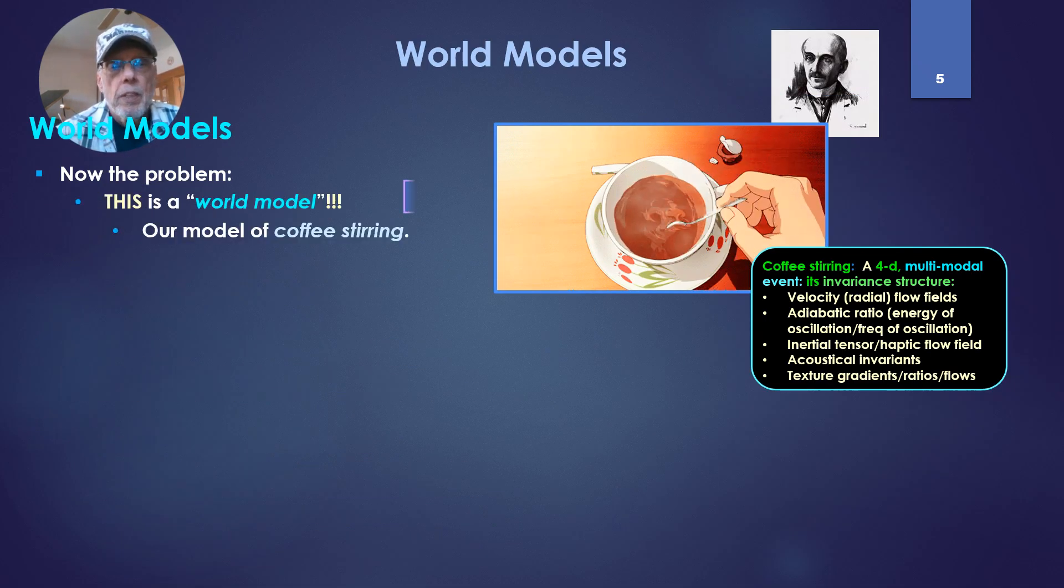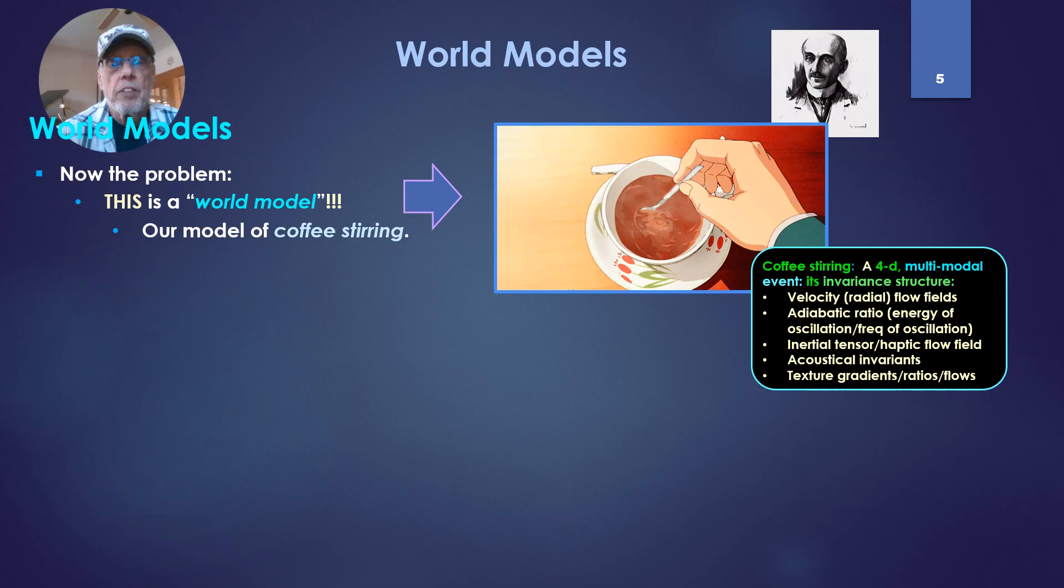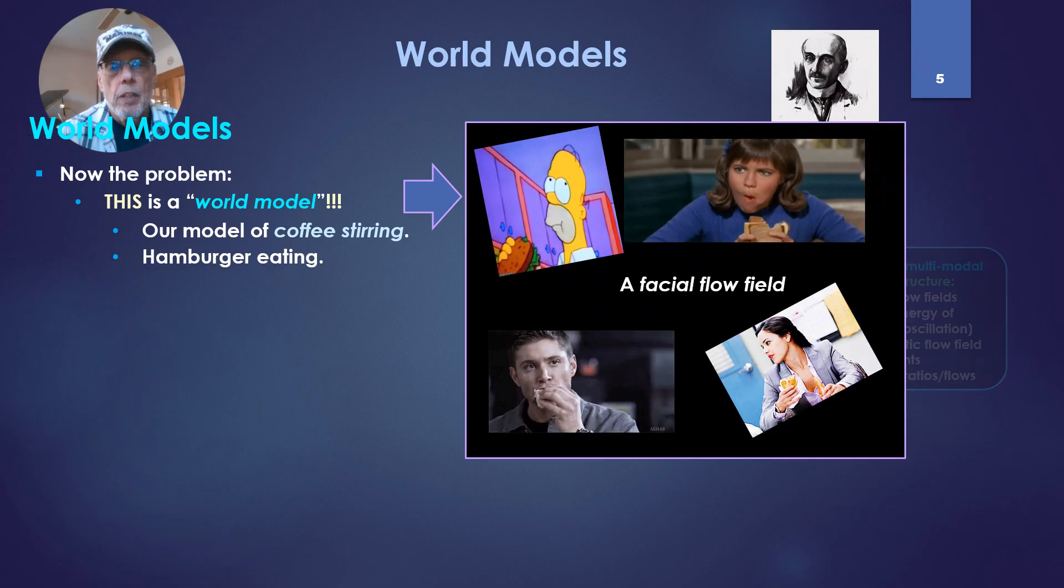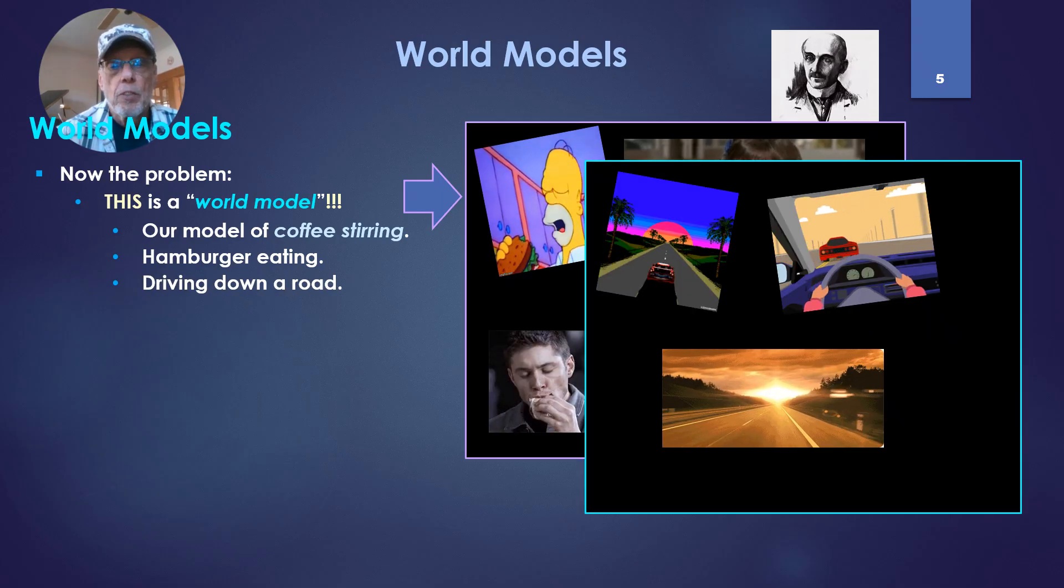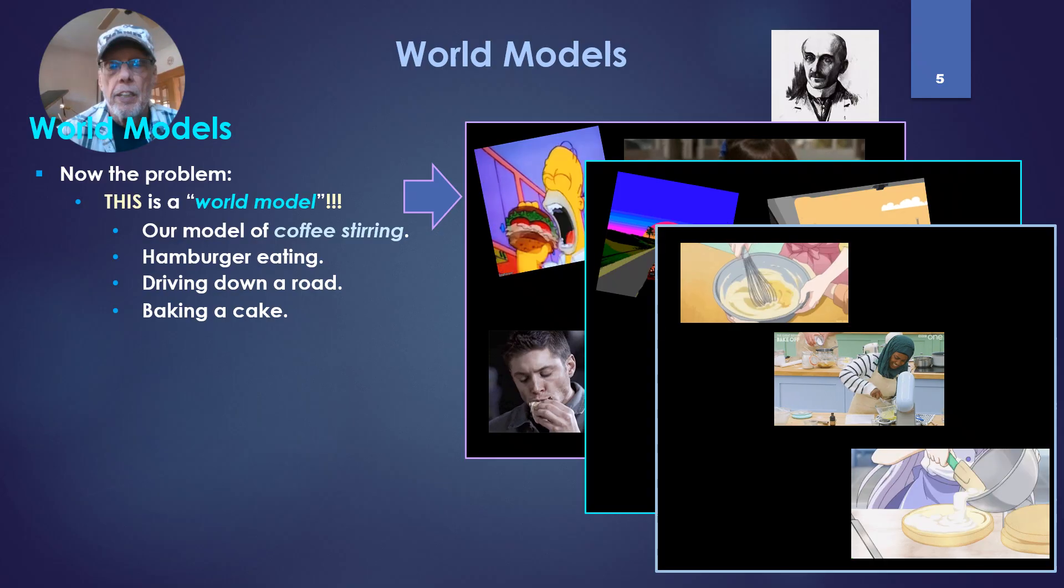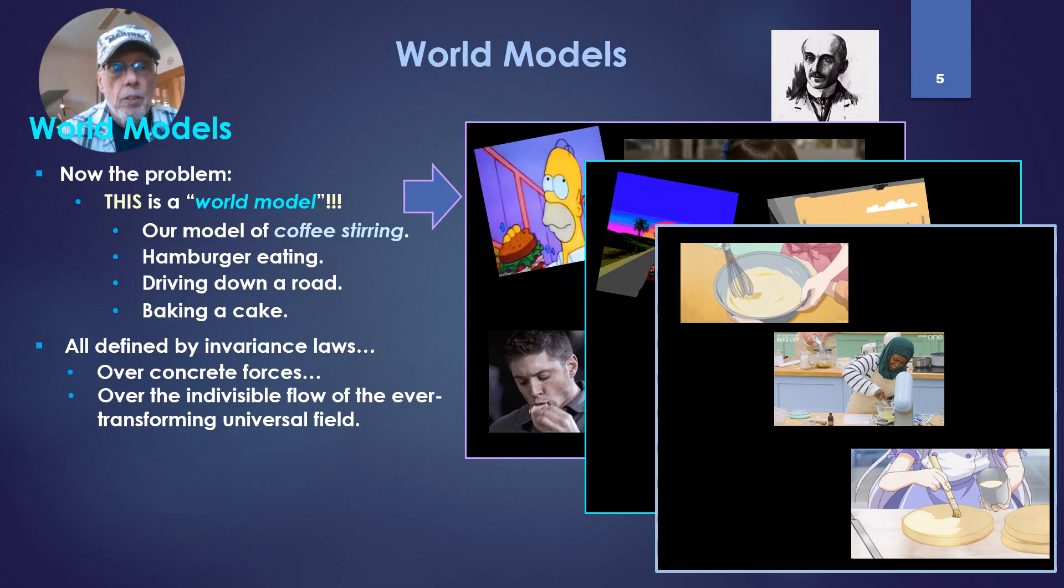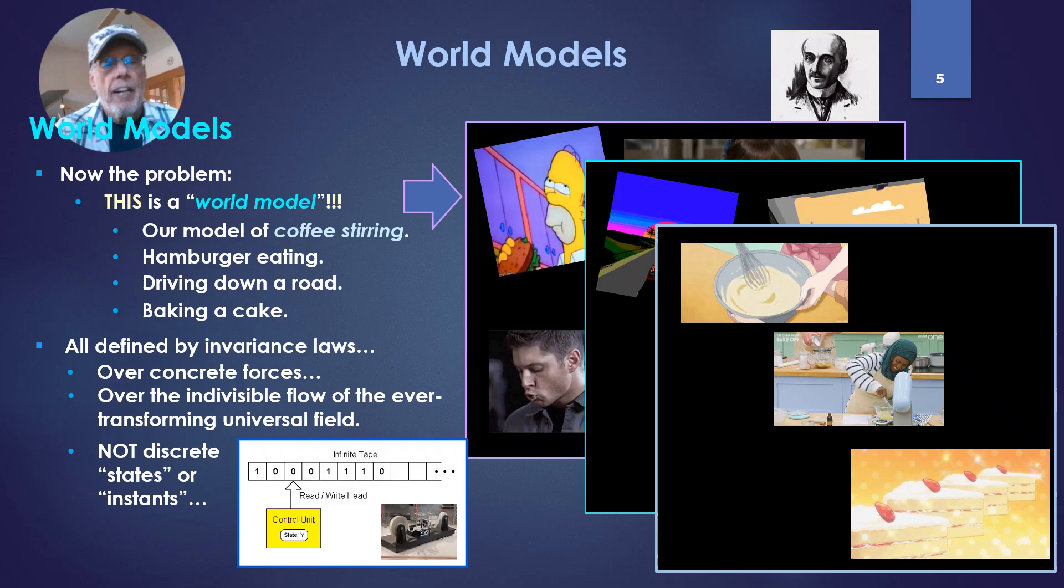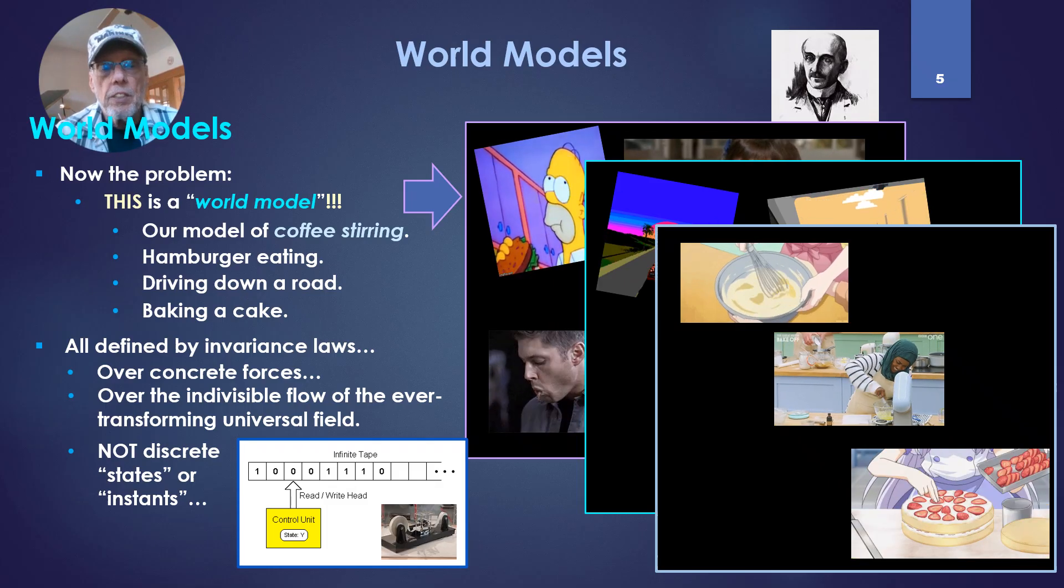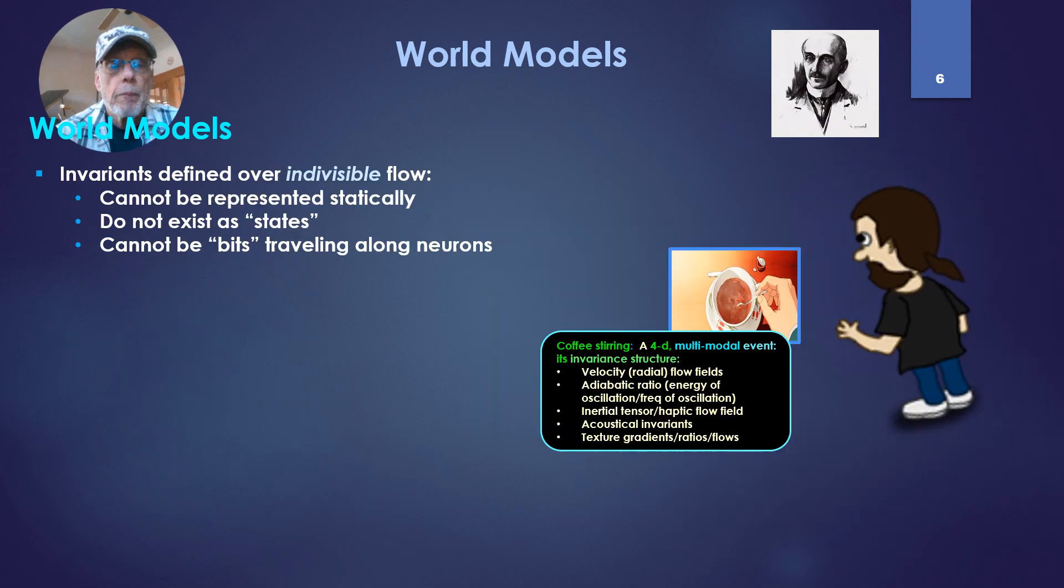So another problem. This is a world model, our model of coffee stirring, with all those invariant laws. Like hamburger eating, which, by the way, is a facial flow field with all the invariants involved. Like driving down a road, building or baking a cake. All defined by invariant laws over concrete forces, over the indivisible flow of the ever-transforming universal field. Not the discrete states, discrete instances of a Turing machine or Turing machine computation.